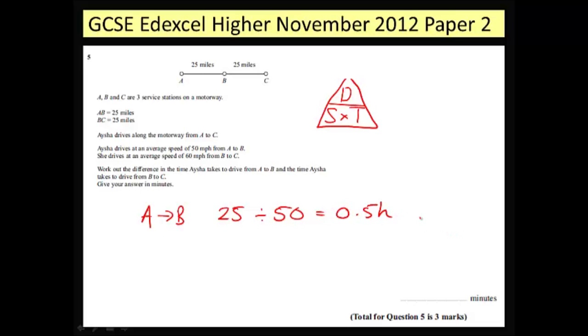Now this is in hours. To convert this to minutes I need to multiply it by 60. So turning this into minutes, we should all recognize that 0.5 hours is 30 minutes.